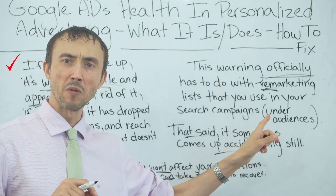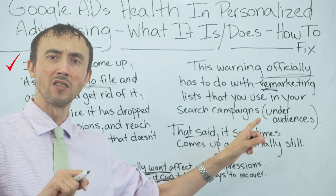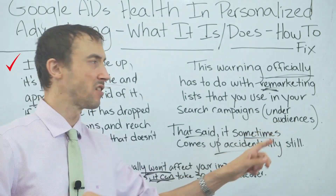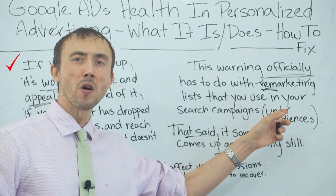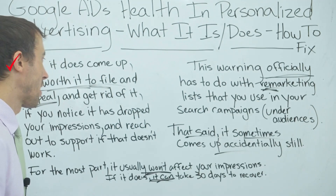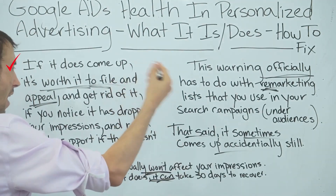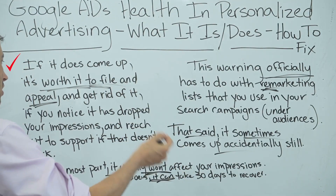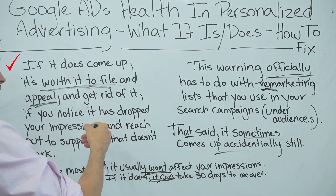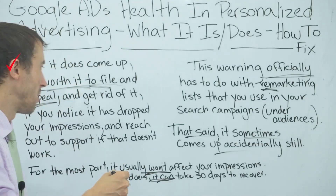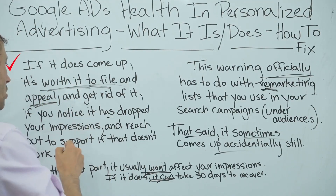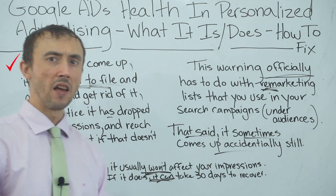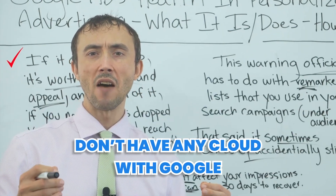If your impressions are going down because of this warning and you want to appeal it, don't just pause the remarketing audiences — go ahead and delete them completely. File your appeal after deleting those remarketing audiences. If it still shows up and you lost the appeal, that's the time you want to reach out to actual Google support.